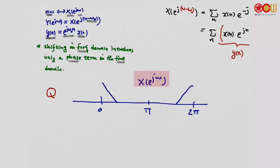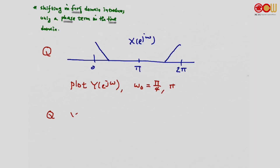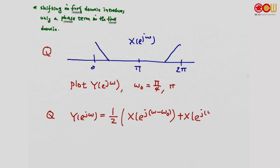Suppose X(e^{jω}) looks like a certain shape in the frequency domain — centered at 0, with features around π and 2π. How should we plot Y(e^{jω}), the frequency-shifted version, when ω₀ = π/4 or π? We leave this as an exercise. Another question: suppose Y(e^{jω}) is the average of two shifted versions — X(e^{j(ω−ω₀)}) and X(e^{j(ω+ω₀)}). What would be the corresponding time-domain sequence y[n]?